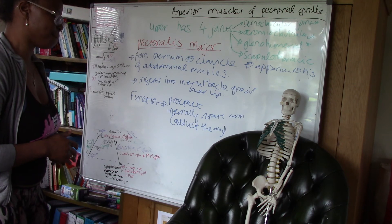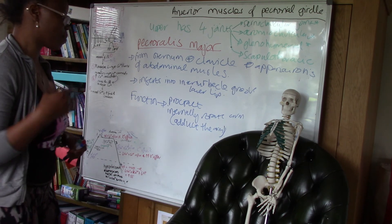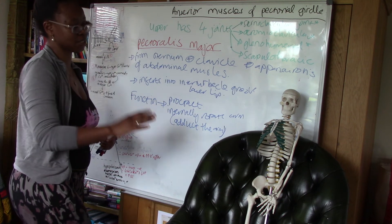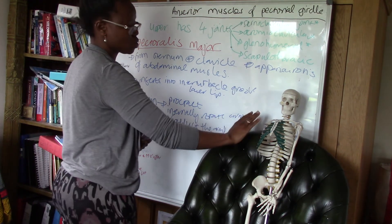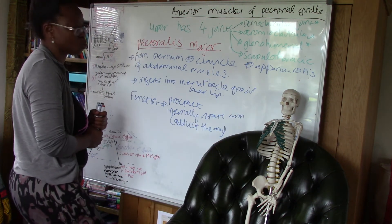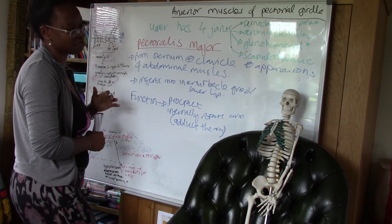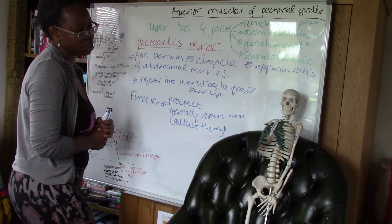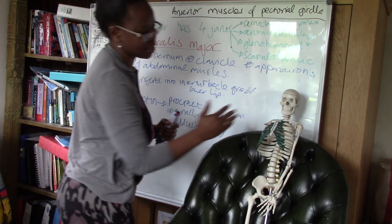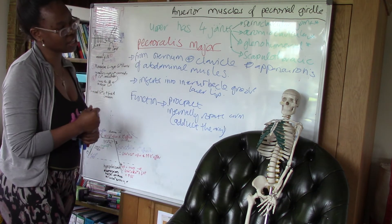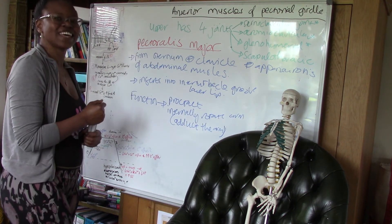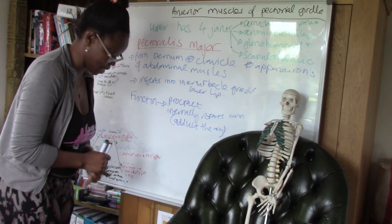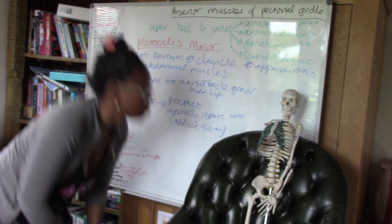Pectoralis major is the most superficial of these muscles, overlying all the deeper muscles including pectoralis minor and serratus anterior. It covers the anterior muscles of the axial-appendicular skeleton that I have discussed today.